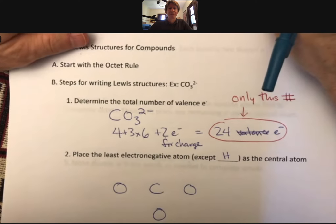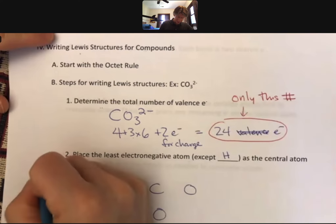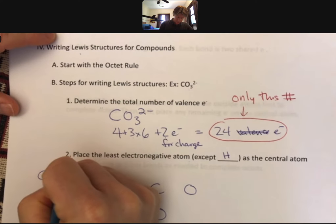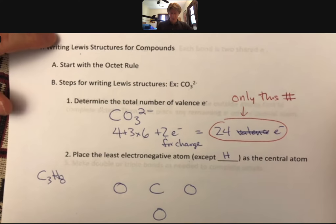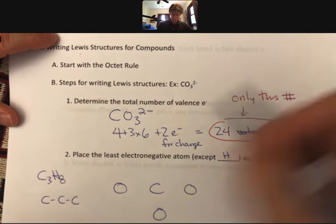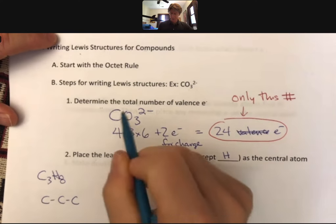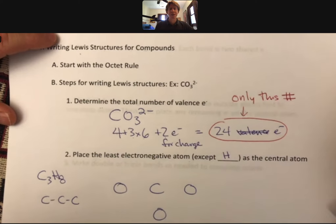And let's see. Okay. So place the least electronegative atom except hydrogen. Well, there's no hydrogens in this. So carbon is the central atom, and I'm going to put my oxygens around it. And all of the Lewis structures you're going to be drawing have one central atom, unless I tell you otherwise. And then the big exception to that is something like propane. And we'll talk about propane. But just so you know, propane has all the carbons in a row with hydrogens sprinkled around.